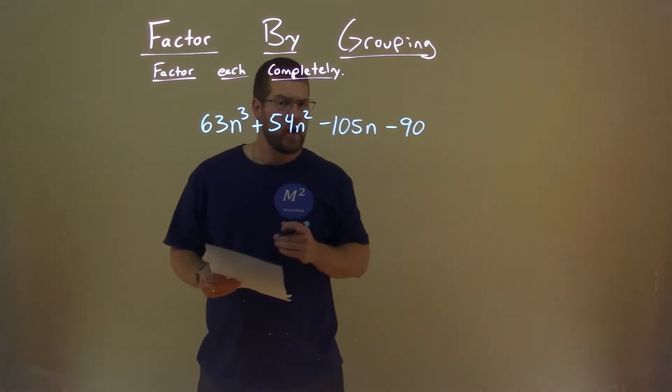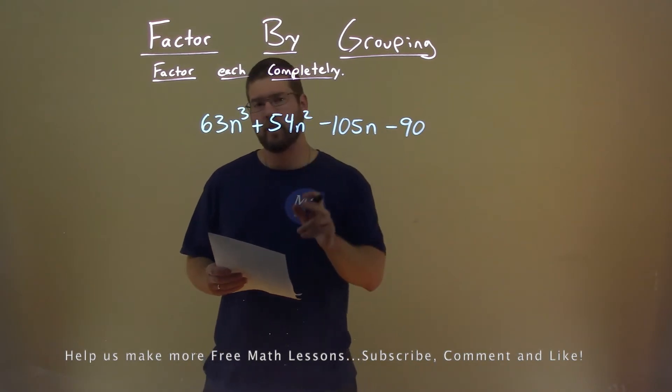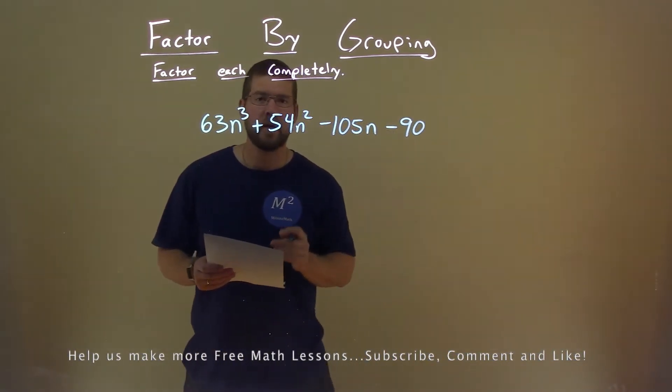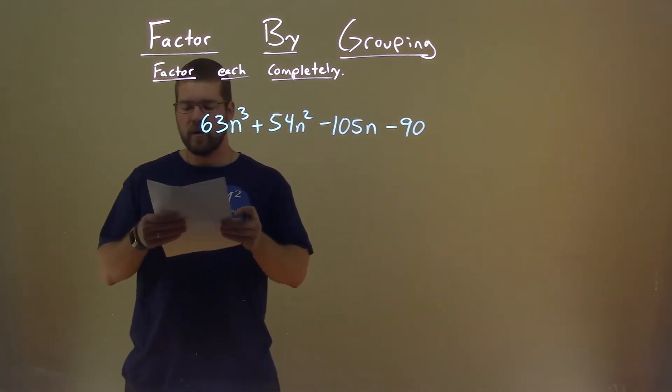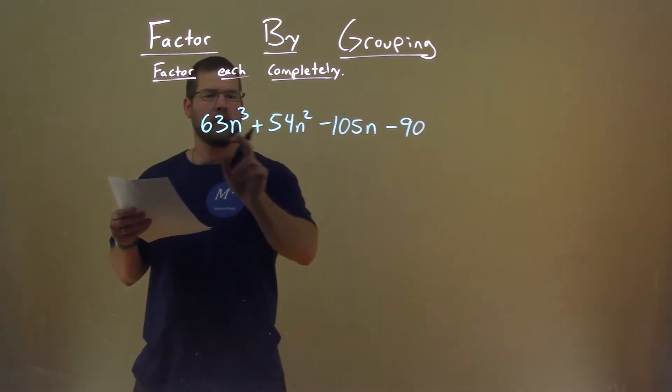We're given this problem right here: 63n to the third power plus 54n squared minus 105n minus 90, and we want to factor this completely. Well, first thing I'm looking at here is saying, okay, is there something that actually goes into all three parts?